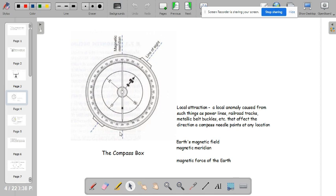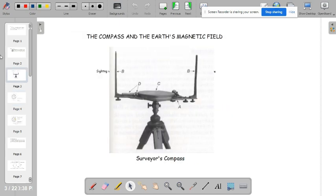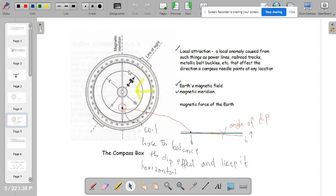This is the compass box, which you can see in a surveyor's compass. This compass needle is actually influenced or is displaced due to the local attraction and the Earth's magnetic field. So that causes the magnetic needle to dip. So that is why if you can see here, this blue line is supposed to be the position of your needle. But due to this kind of attraction...